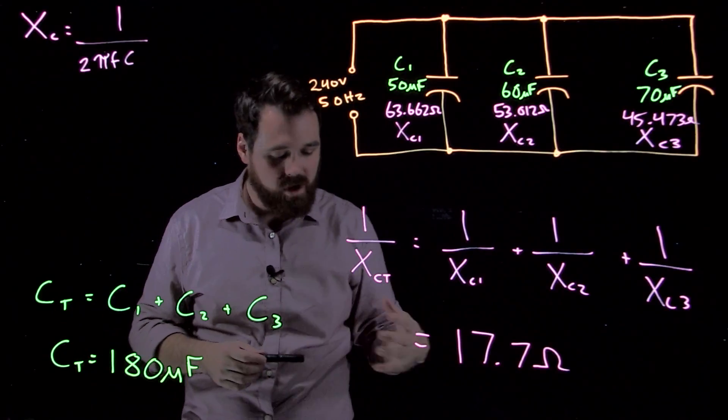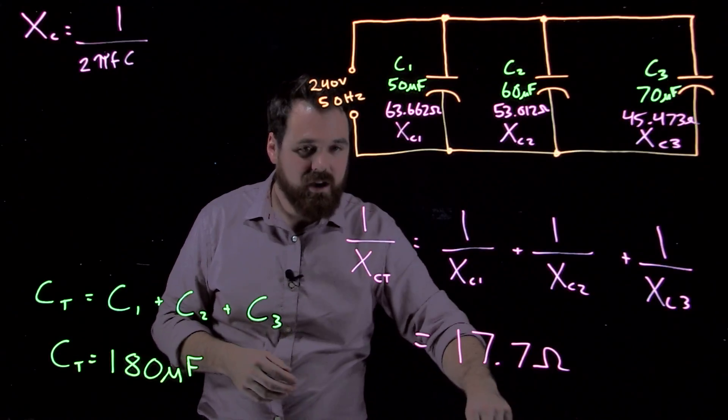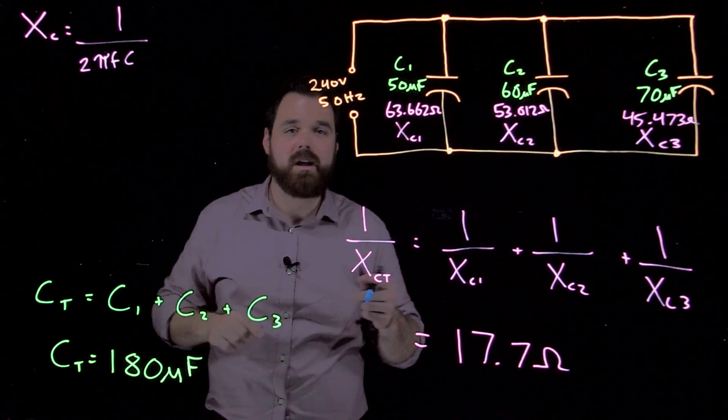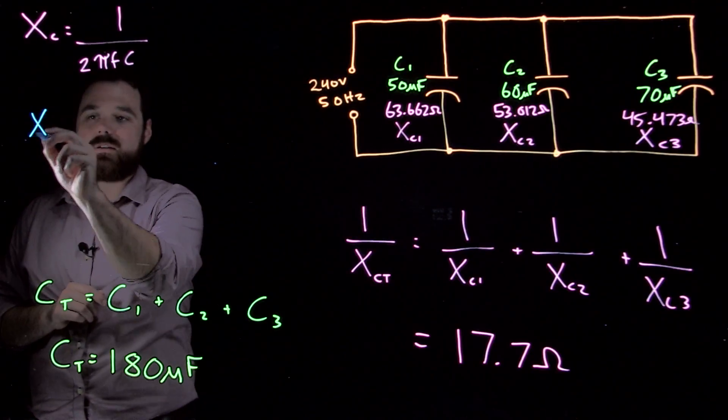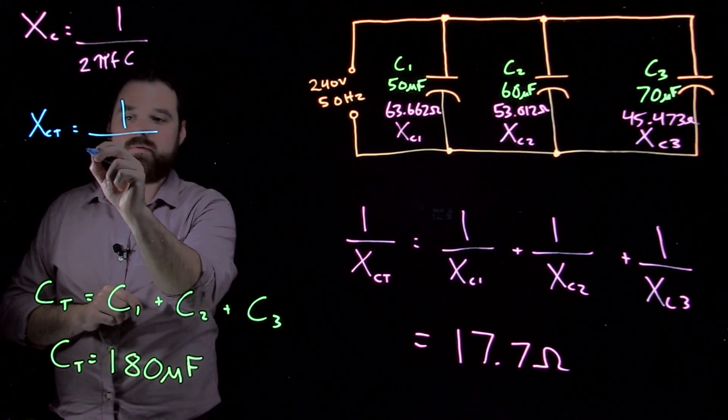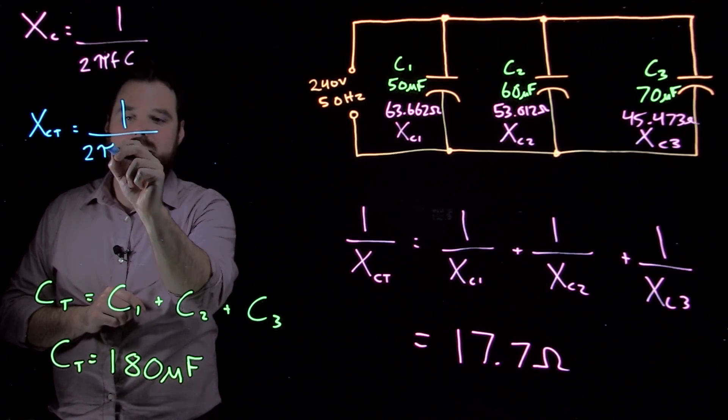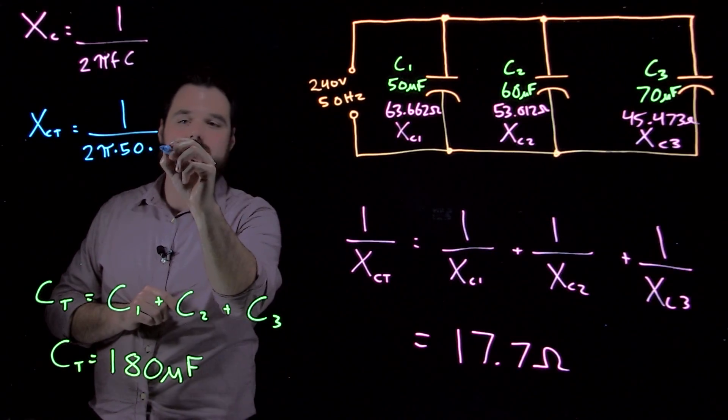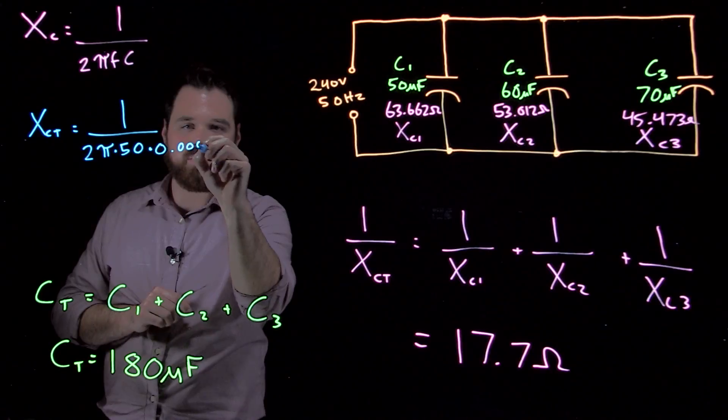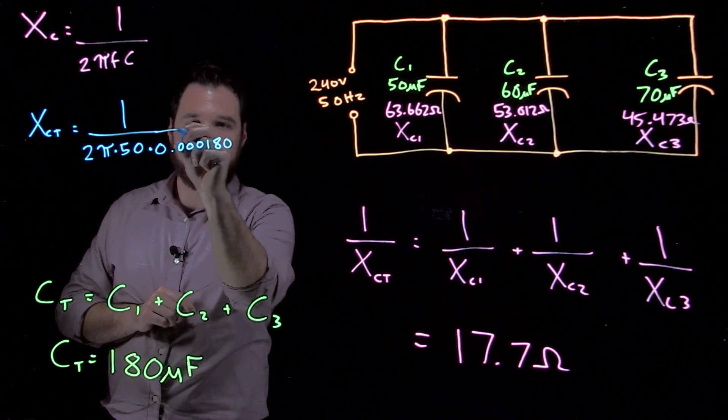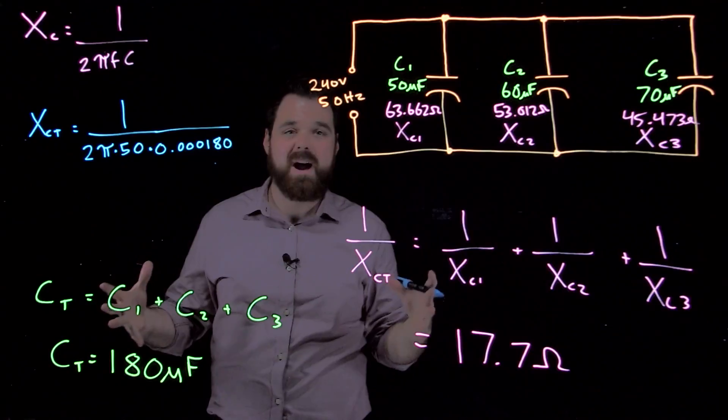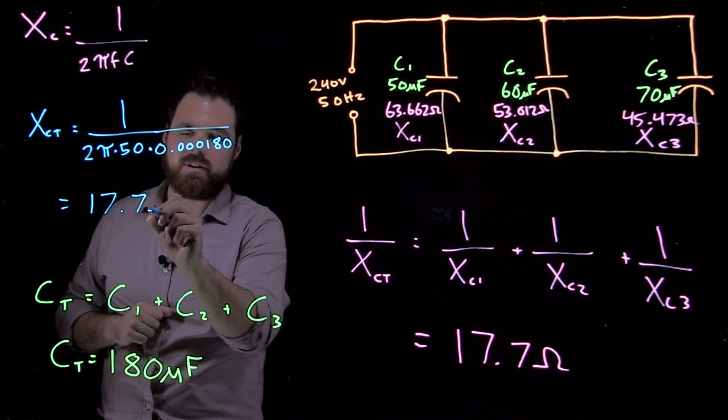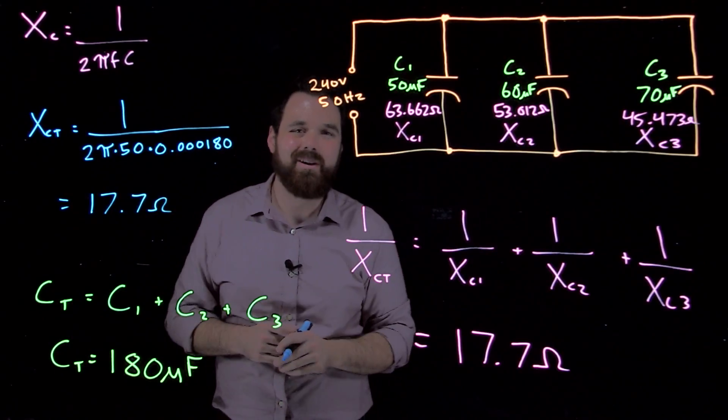At this point, I like to double-check my work, make sure I did everything okay. I'm going to do one other little thing. I'm going to take this formula of XC equals 1 over 2πFC, and I'm actually going to go XC total equals 1 divided by 2 times π times 50, which is my frequency, times 0.000180, which is my capacitance in farads. That's also going to give me a number pretty close to 17.7 Ohms. So now I've done something right.